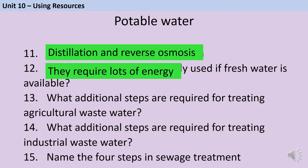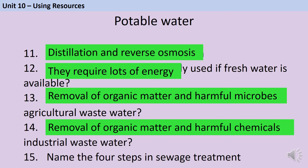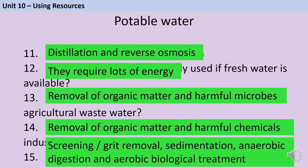If we're using agricultural wastewater from farms, we need to remove organic matter and sterilise it to remove harmful microbes. If we're using industrial wastewater from chemical factories, we again need to remove organic matter and may need to remove harmful chemicals. If we're making potable water from sewage, we first do screening and grit removal, then a sedimentation step to produce a sewage sludge blanket and effluent, then anaerobic digestion of the sludge blanket, and finally aerobic biological treatment of the effluent using bacteria.